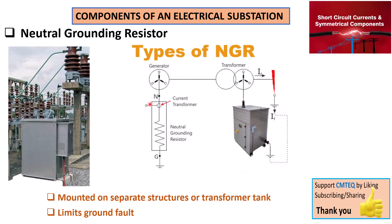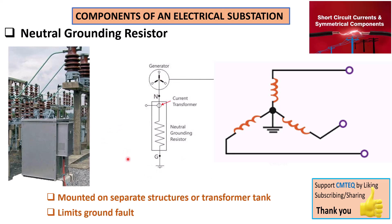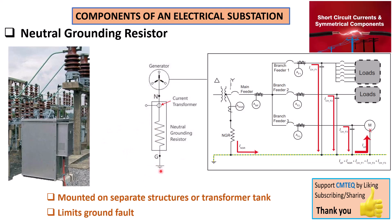There are basically three types of earth-neutral grounding connection. The first one is the solid type, where we replace this resistance with a solid wire — basically just making an earth connection, like when you take an earth wire down to the ground in an electrical installation. In this case, we tie the neutral point of our generator or transformer straight to ground.